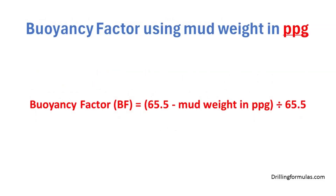Buoyancy factor formula using mud weight in pound per gallon: buoyancy factor is equal to 65.5 minus mud weight in pound per gallon, divided by 65.5.